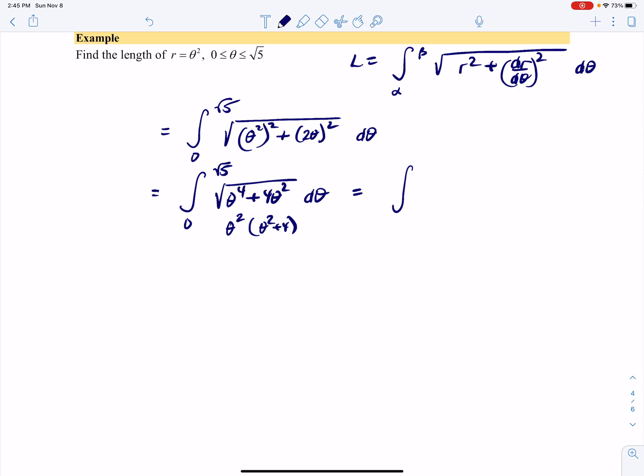When we take the square root of θ², that's θ, and we're left with the square root of θ² + 4. That's from zero to √5.